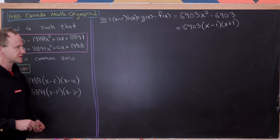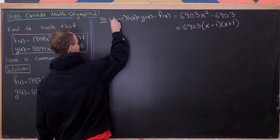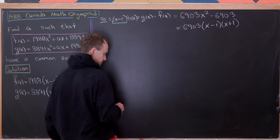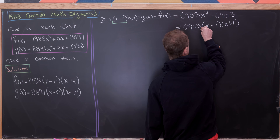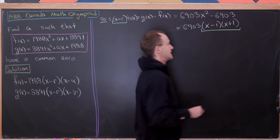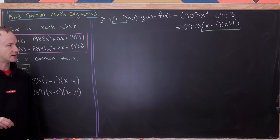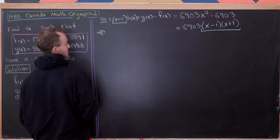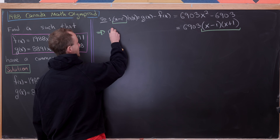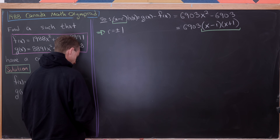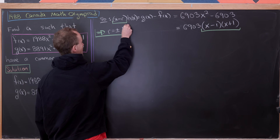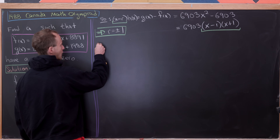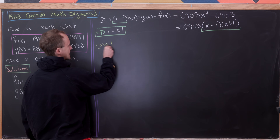Now let's observe that the left-hand side has (x - r) as a factor, and the right-hand side has factors (x - 1) and (x + 1). So that gives us two possibilities immediately: r equals plus or minus 1. And in fact, those are the only possible values of r. We'll work through these one at a time.